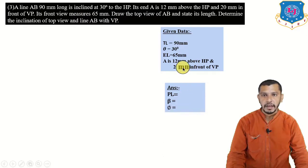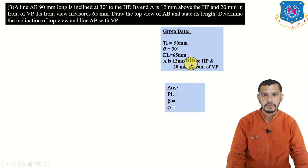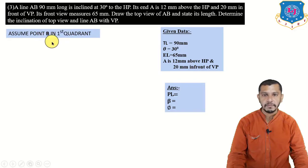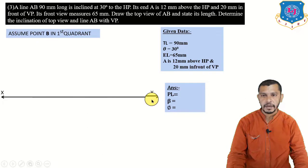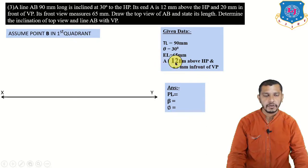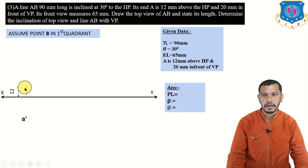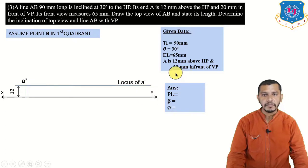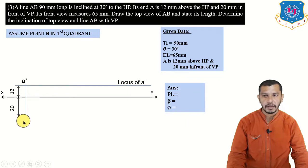The quadrant of point B is not given. Since point A is in the first quadrant, we assume B in the first quadrant also — so B is above HP and in front of VP. Draw the XY reference line. A is 12 mm above HP, so 12 mm above XY we get A-dash and the locus of A-dash. A is 20 mm in front of VP, so 20 mm below XY we get the plan of point A and the locus of A.